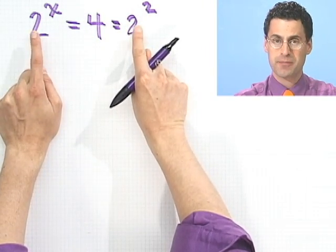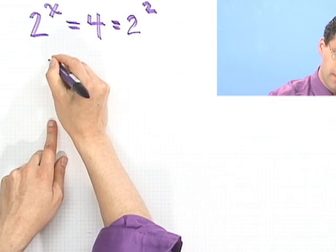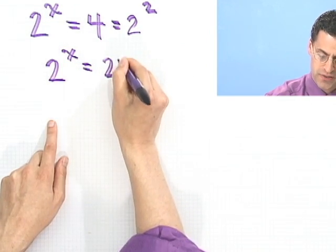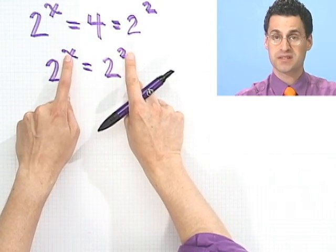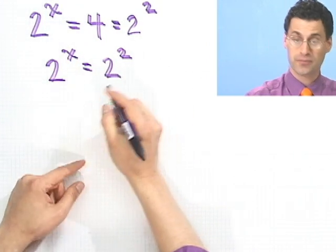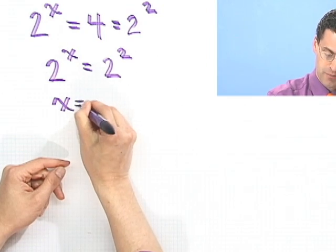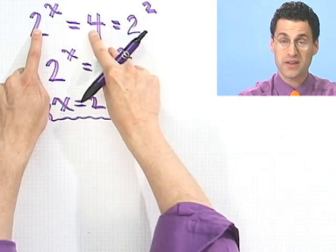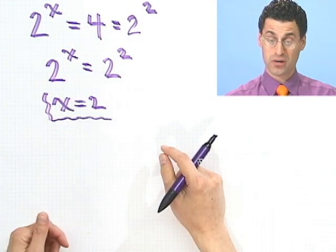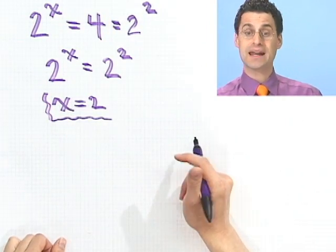Well, now the bases are the same. So if I know that 2 to the x equals 2 to the 2, since the bases are the same, that means these must be the same. So that means x must equal 2. So there I get the answer that we already figured out beforehand. I did it by converting everything to the same base. That actually will work when these things are base compatible, let's say.